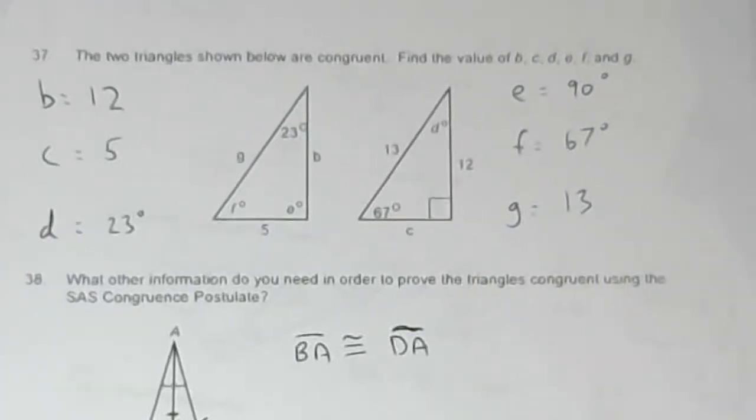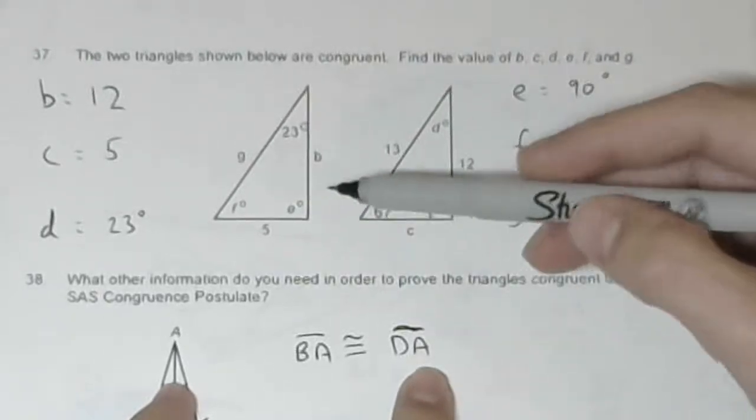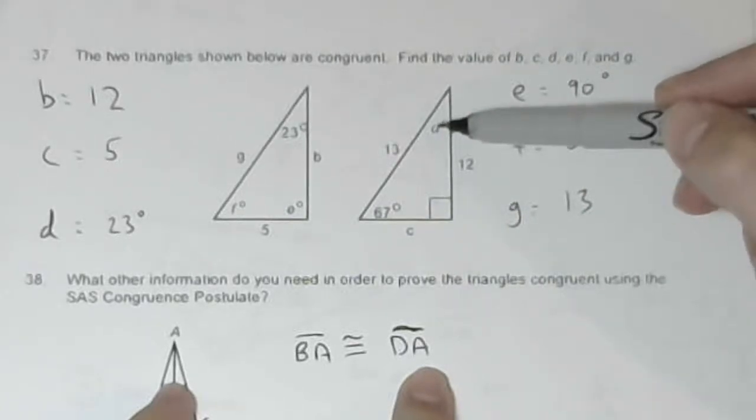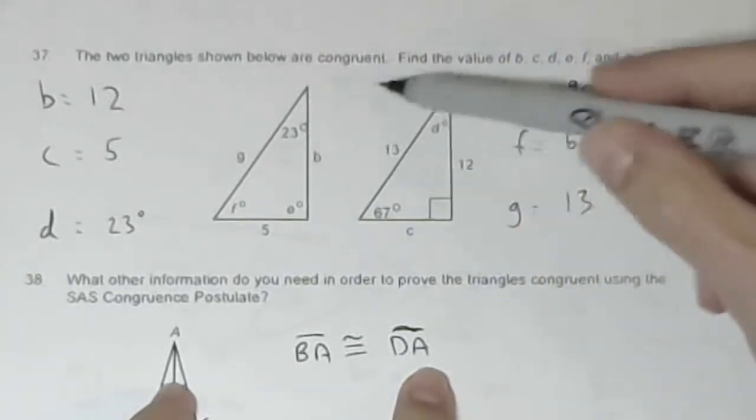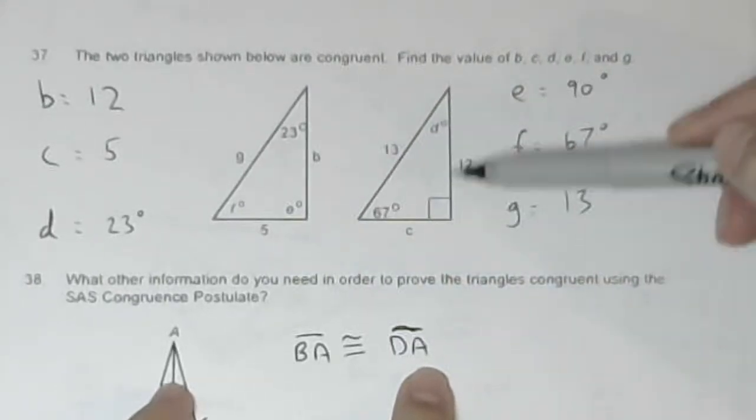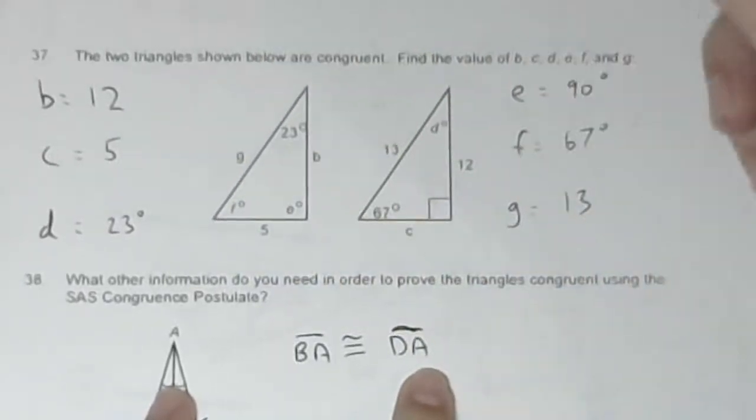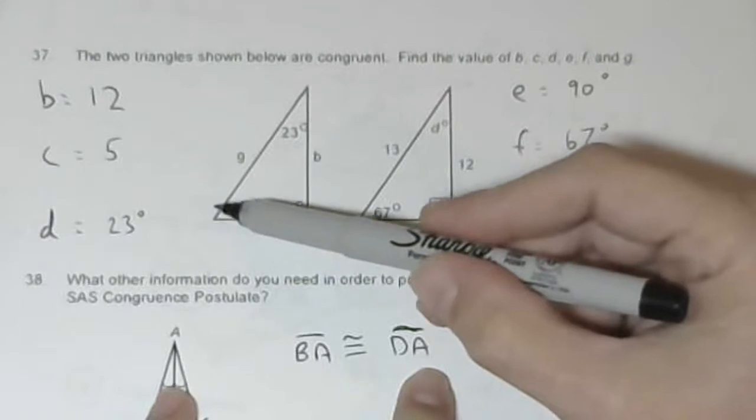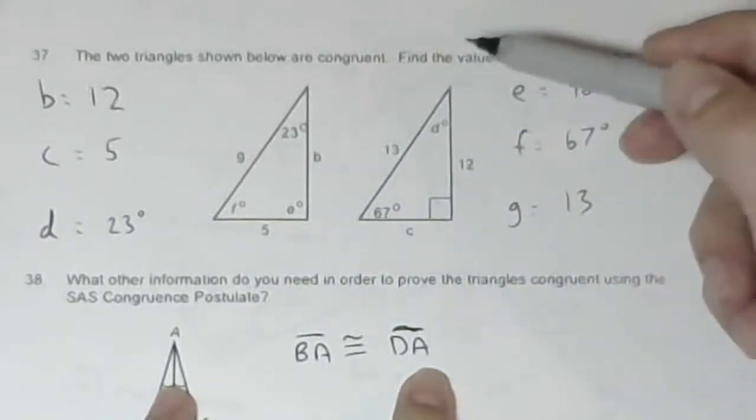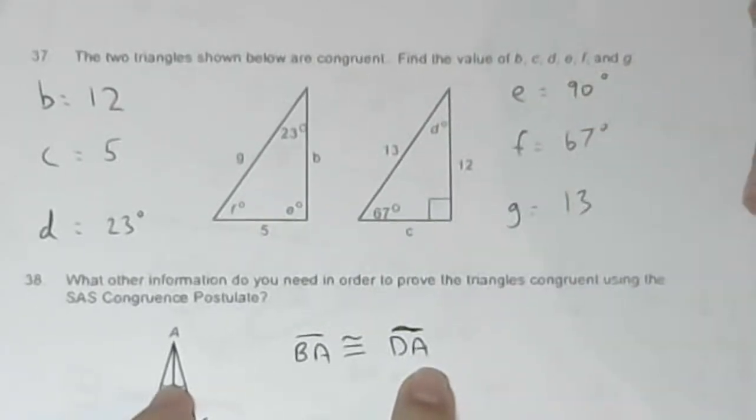Okay, 37. It says the two triangles shown below are congruent. Find the value of b, c, d, e, f, and g. Well what they should do, it looks pretty obvious they are oriented the same way, but it really should name the three vertices of each triangle and tell you the order. Anyway, we are just going to match these.